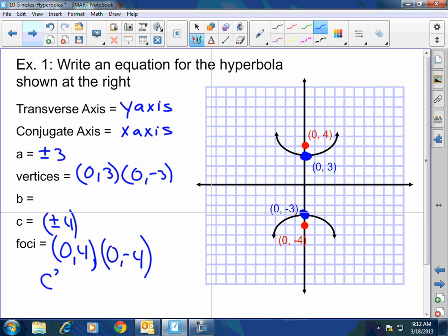Now to get my b. Well, we had said that c squared equals a squared plus b squared. So c squared is 4 squared. So we got 16 equals 9 plus b squared. So when I subtract it, that's going to be 7. So b equals the square root of 7. You with me here, guys?